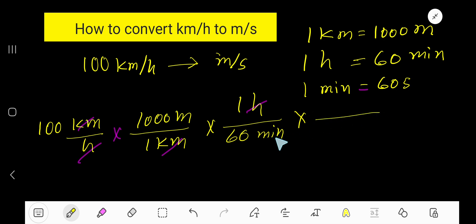Now we'll convert minute to second using this conversion equation. We need to cancel minute, so minute will come to the top. With minute we have 60 seconds. Write 60 seconds.